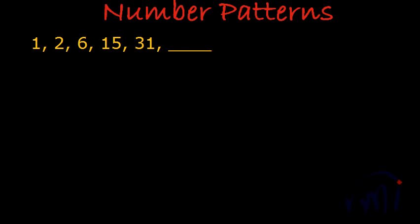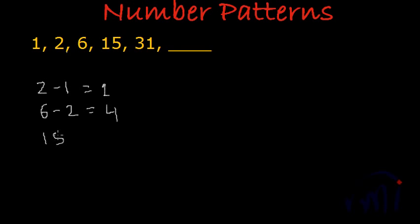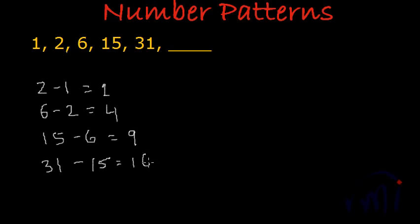The first step I suggest to find the logic in a number pattern or series is to find differences. So if I do the second term 2 minus the first term 1, the difference is 1. The third term 6 minus the second term 2, the difference is 4. Then 15 minus 6, the difference is 9. And the fifth term 31 minus the fourth term 15, the difference is 16.